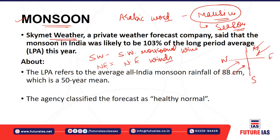This long-term period average considers around 50 years of mean average rainfall. In the last 50 years we take that average to find out the long-term average. Skymet Weather found that this year the rainfall would be 103 percent of the long period average, which is over and above average rainfall. So this year also we will have surplus rainfall in our country.